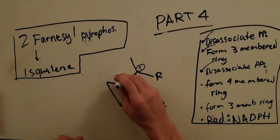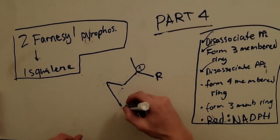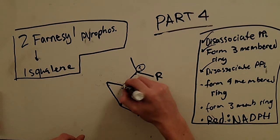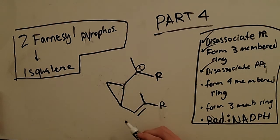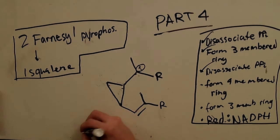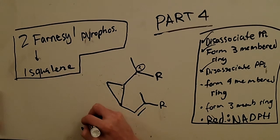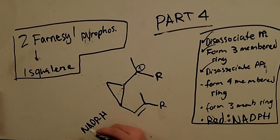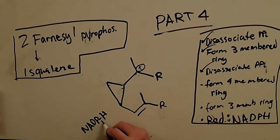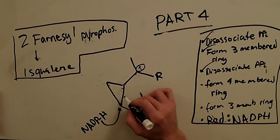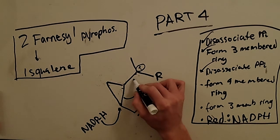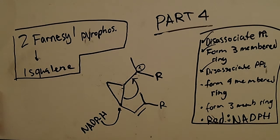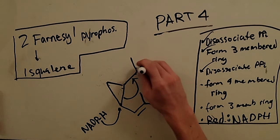So now we're really close to squalene and we've just got to do one more thing and that's a reduction. And that's going to happen here at this carbon. So we're going to say NADPH. So I'm not showing this explicitly again with the whole nicotinamide adenine diphosphate ring system. I'm just short-handing it. It attacks. And this comes up and forms that double bond again. Positive charge is gone.